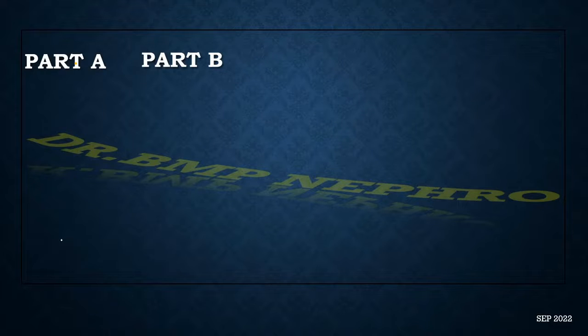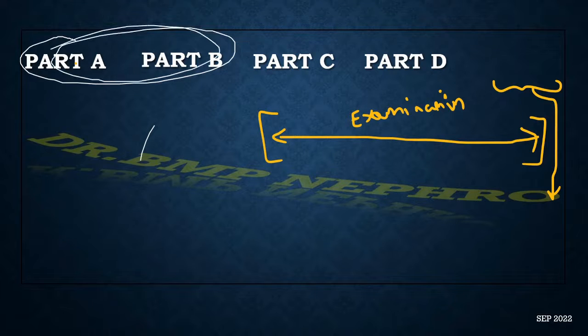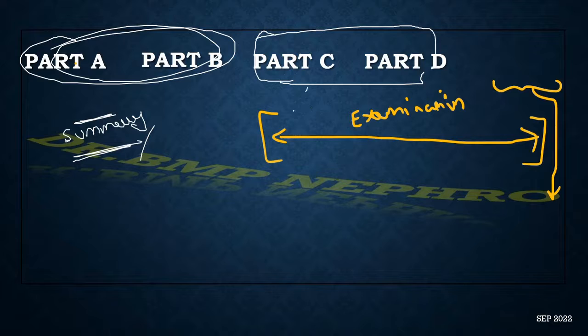So after Part A, Part B, Part C, D, and E, you have to give a final diagnosis. So Part A is the basic details of the patient, Part B the important components I have discussed. After Part A and Part B, you should make a summary in your own language. How have you interpreted what is the syndrome, what is the nephrological syndrome you have interpreted from the history? From Part C and Part D, complete the examination in total head to foot.